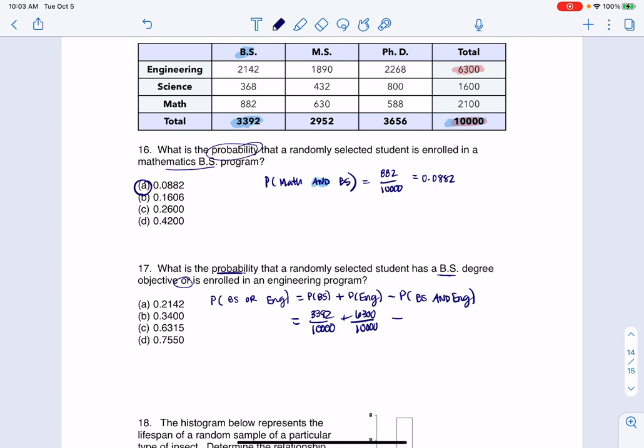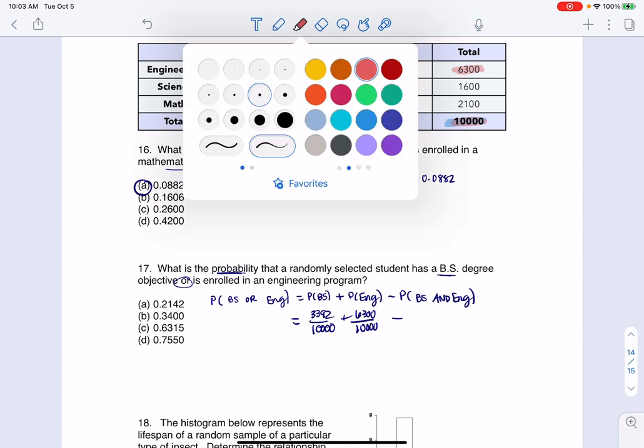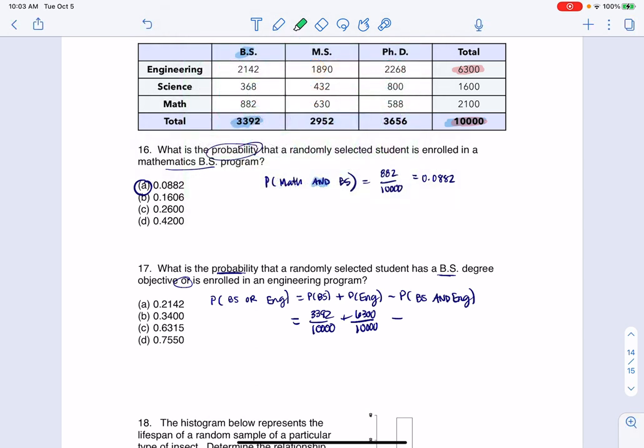And then let's see if we can find any overlap. I like different colors, so we'll go with green. Anytime you want the and, we've got to look for where the row and column overlap. Here's the bachelor of science folks, and here are the engineering folks. You can see they overlap at 2,142 out of 10,000.